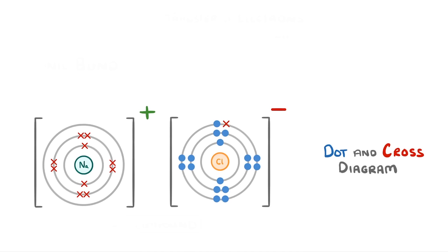To do it properly there are a couple features to notice though. One is that we've drawn the electrons of one atom as dots and the other as crosses. This is so that we can tell which electrons belong to which atom and you should show the movement of any electrons with an arrow.